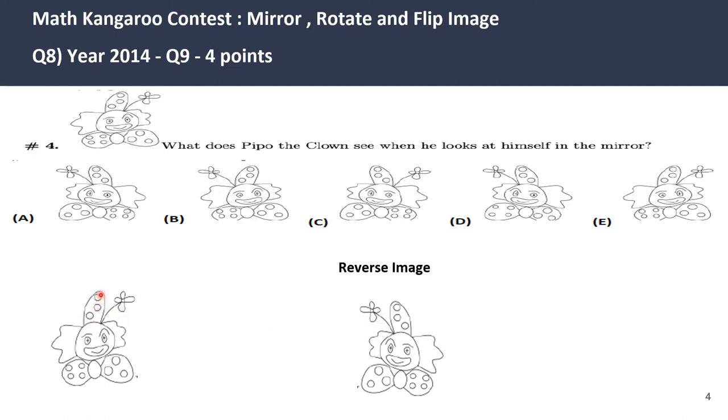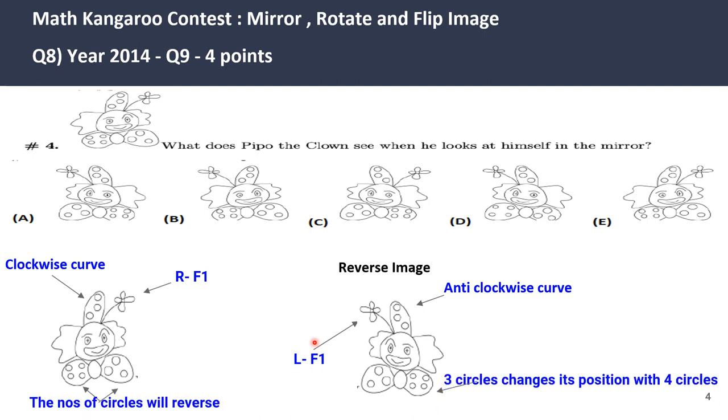The flower which is on the right hand side in the reverse image is shifted on the left. The curve here on the clown's hat is tilting in the clockwise direction. In the reverse image it will be shown as anti-clockwise. If you look at those two collars, there are four and three dots. This will interchange its position in the reverse image. The three-dot collar which is on the right hand side will be seen on the left hand side. Also, one thing you need to notice is in the actual image the clown is looking in the right direction. In the reverse image the clown would be looking in the left direction.